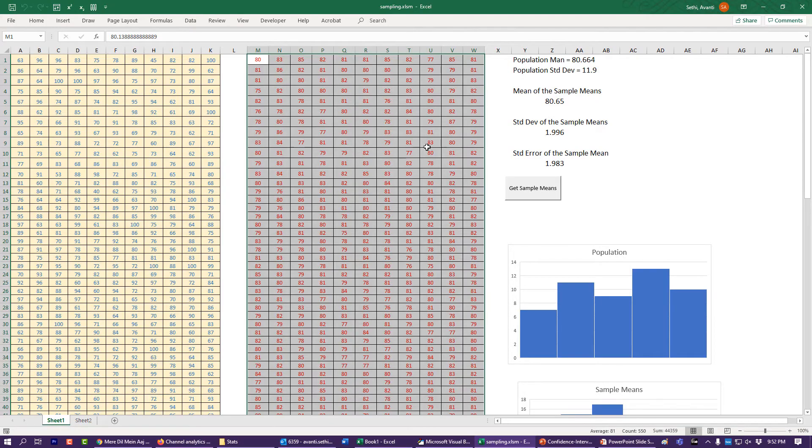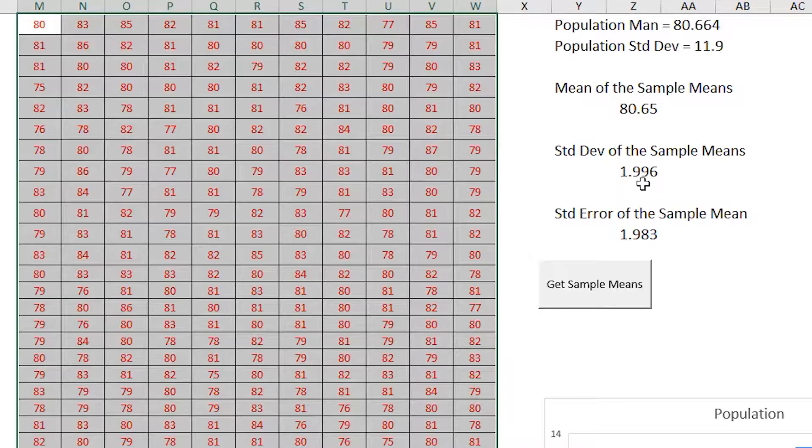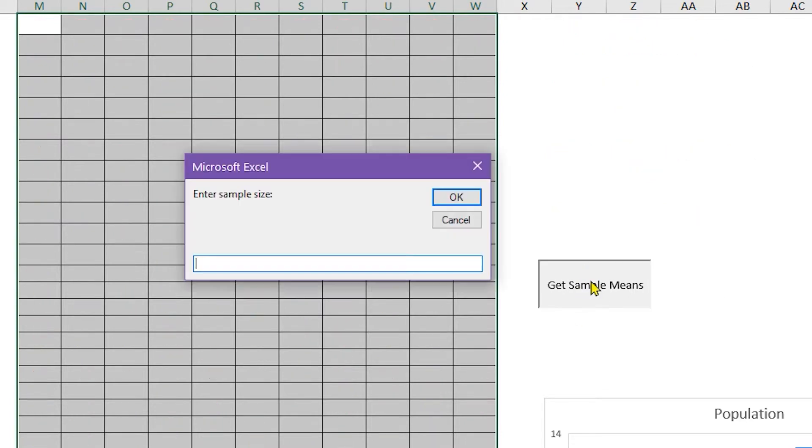If I take a sample size of 100 what happens then? Well this will become really small. 11.9 divided by 10 is 1.19. So we expect something like a 1.2 range here, and this will be pretty much 80s in this neighborhood. So let's take a sample size 100.